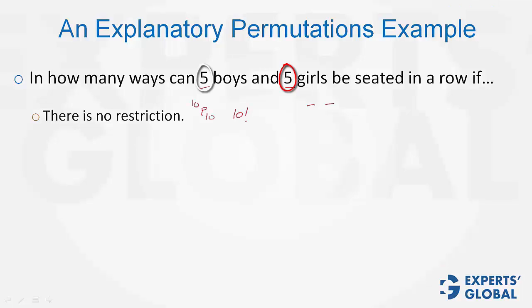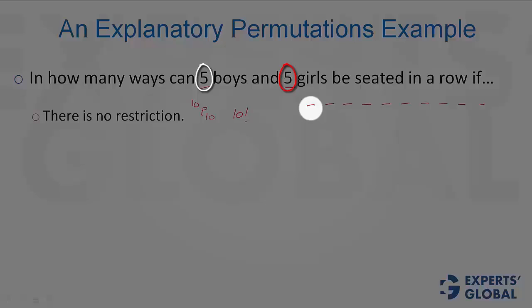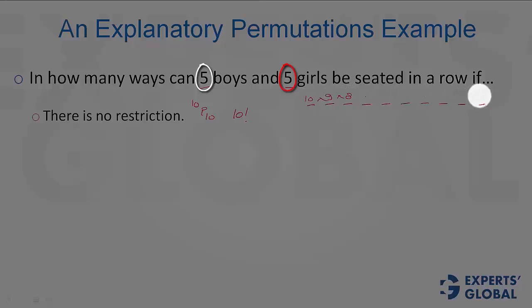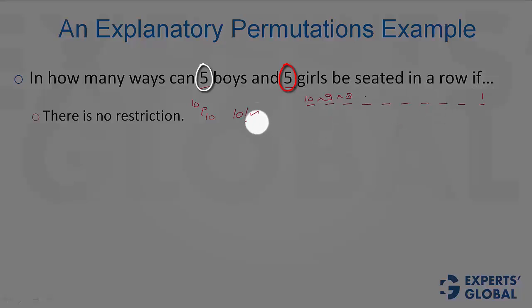Imagine if there are 10 positions: the first position can be filled in 10 ways, second in 9 ways, third in 8 ways, and similarly, the last position can be filled in only 1 way. That's how we get to 10 factorial.